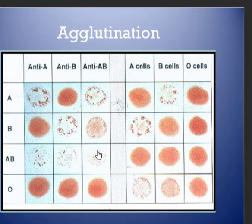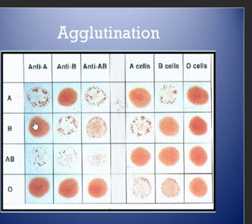Look at this and see if you can figure out what's going on. Why does B-type blood not clump when you put anti-A on it? Because you don't have any A proteins, so there's nothing for the antibodies to stick onto. But there are B proteins present.